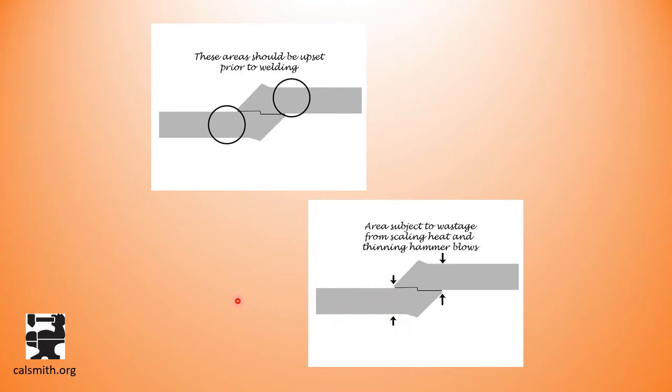The goal is to have a seamless weld that is the same thickness as your parent stock. Starting a little bigger to begin with is going to give you some extra material that you can stand to lose.